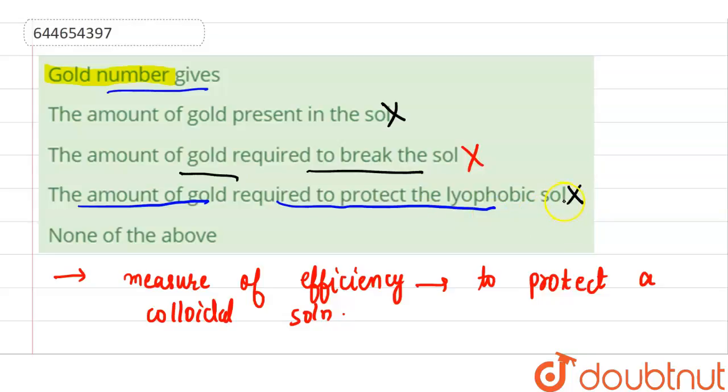All the given options A, B, C are not matching with the definition of gold number. Therefore, we can say that option fourth is the correct answer of this question: none of the above.